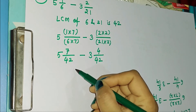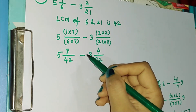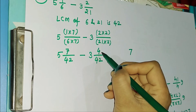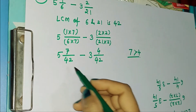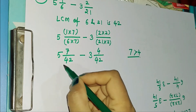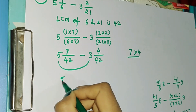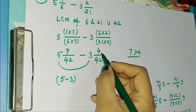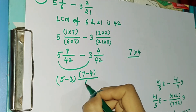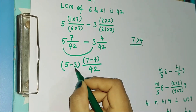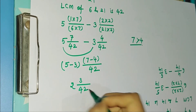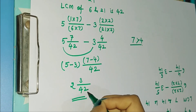Now we can see that both fractions have the same denominator. Next we check the numerators. The numerator of the first fraction, 7, is greater than the numerator of the second fraction, 4. So it is easy to solve. We subtract the whole parts: 5 minus 3. Then we subtract the numerators: 7 minus 4, and keep the denominator as it is, that is 42. So 5 minus 3 is 2, 7 minus 4 is 3, and the denominator is 42. The solution is 2 3/42.